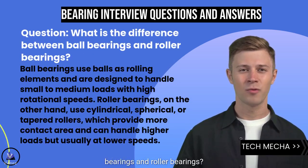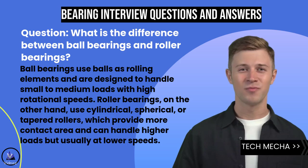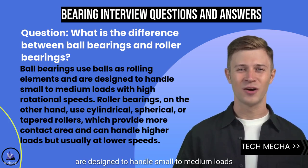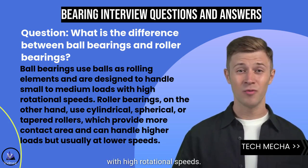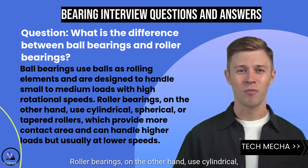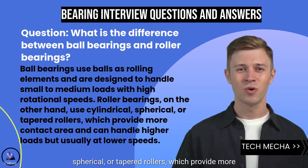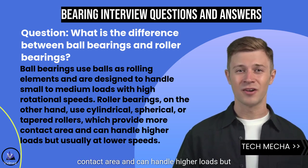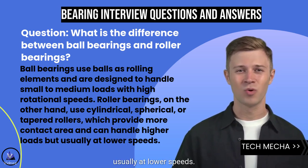What is the difference between ball bearings and roller bearings? Ball bearings use balls as rolling elements and are designed to handle small to medium loads with high rotational speeds. Roller bearings, on the other hand, use cylindrical, spherical, or tapered rollers, which provide more contact area and can handle higher loads but usually at lower speeds.